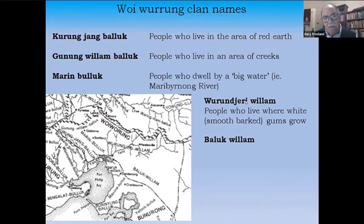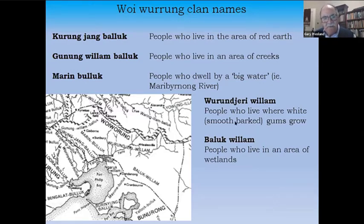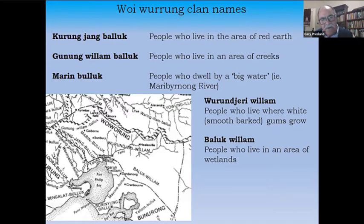The Balak Willam and Karanjung Balak together form two halves of a large clan called Wurundjeri Balak. The Balak Willam are people who live in an area where there are wetlands. This is how they identified themselves — an indication of the way in which people indicate their identity in terms of the place in which they were born or live.